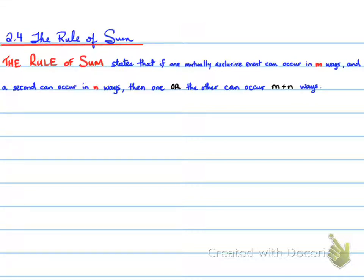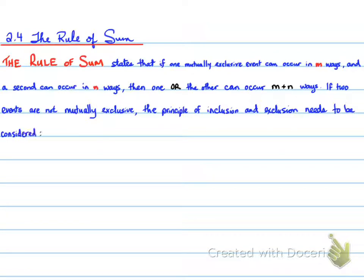If two events are not mutually exclusive, then the principle of inclusion and exclusion needs to be considered. That is, the number of A or B equals n(A) + n(B) - n(A and B).